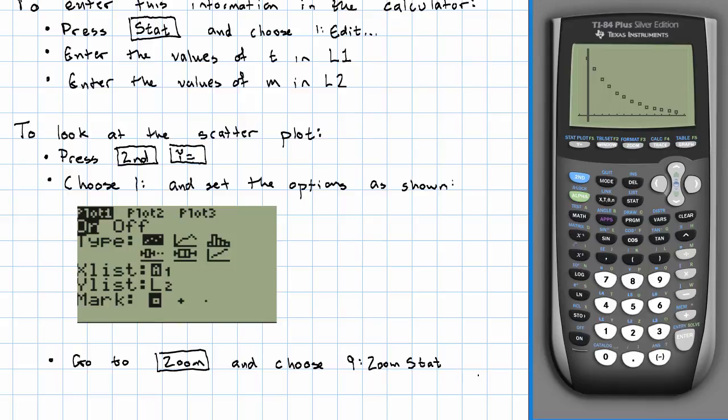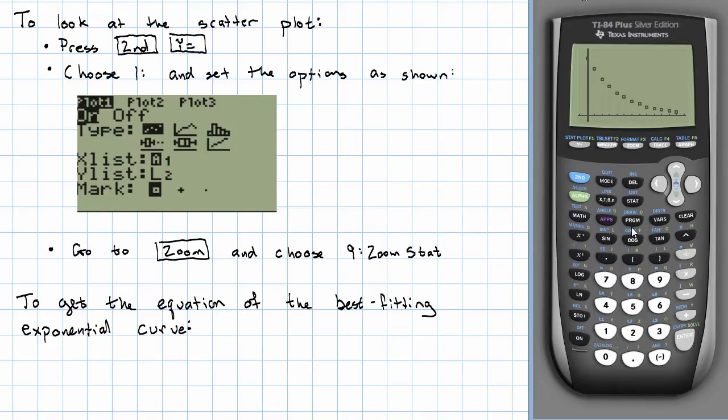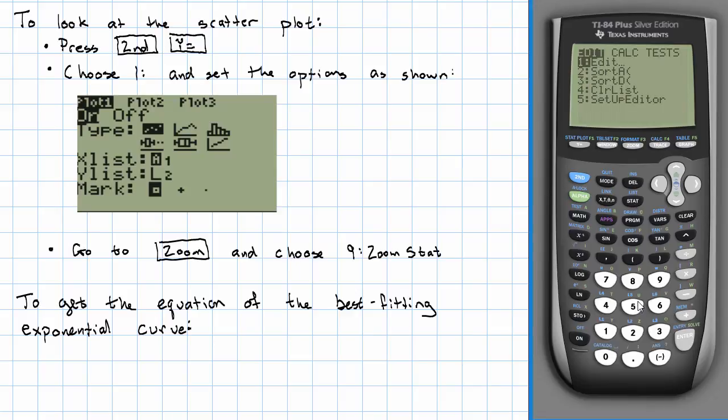And just like in the scatterplot we were looking at before, we see that this looks exponential. How can we get the calculator to tell us what the exponential curve is? In order to do that, I'm going to go to stat again.